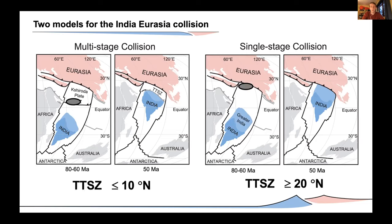Crucially, each model makes a distinctly different prediction about the paleolatitude of remnants of the Trans-Tethyan subduction zone. The single-stage model requires the intra-oceanic subduction system to have been situated at a paleolatitude of greater than 20 degrees north throughout the Late Cretaceous and Paleocene, whereas in the multi-stage scenario it would be expected at a more southerly paleolatitude near the equator until it collided with India in the Paleocene.